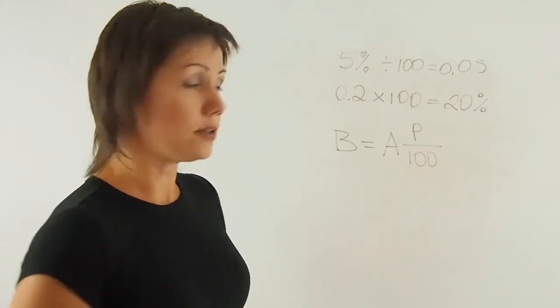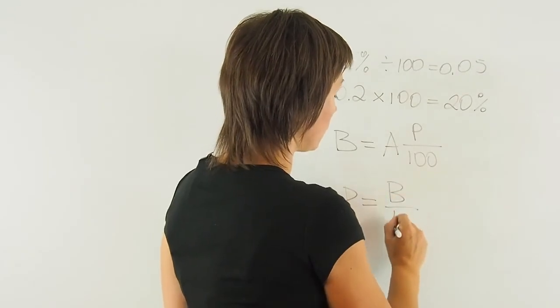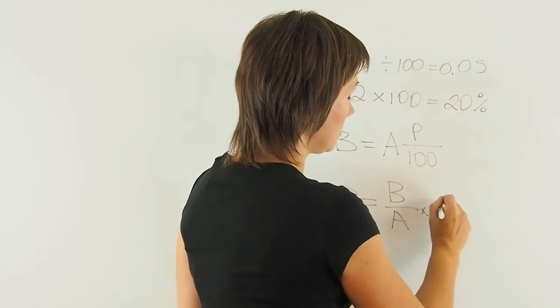And if I want to determine what percentage is one amount of the other, then I'll use the formula p equals b over a times 100.